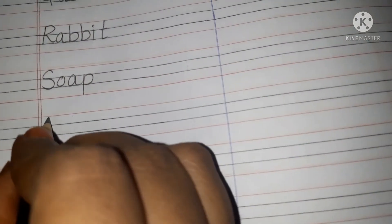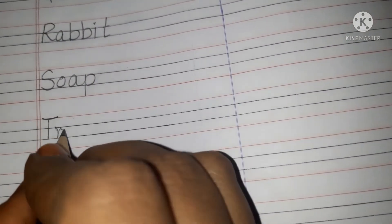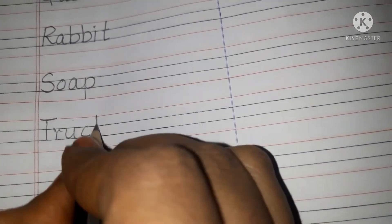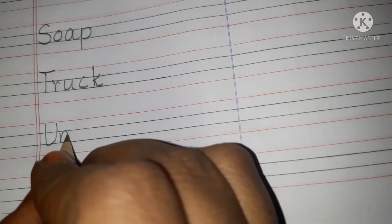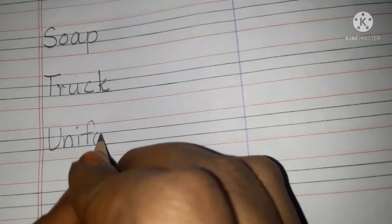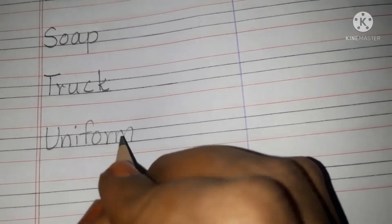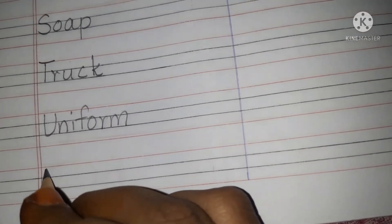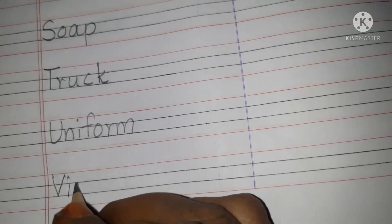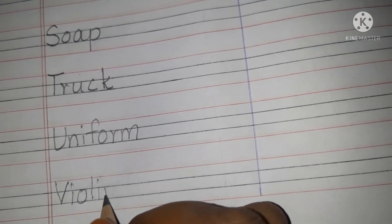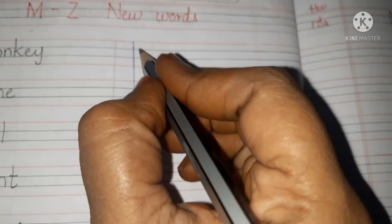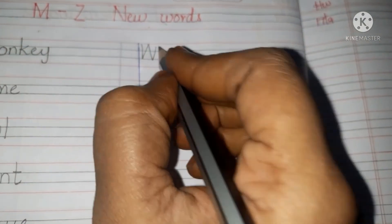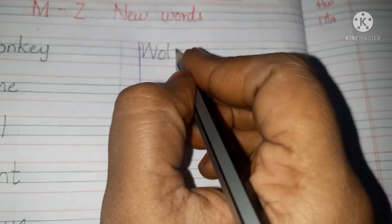T for truck — T-R-U-C-K, truck. U for uniform — U-N-I-F-O-R-M, uniform. V for violin — V-I-O-L-I-N, violin. W for wolf — W-O-L-F, wolf.